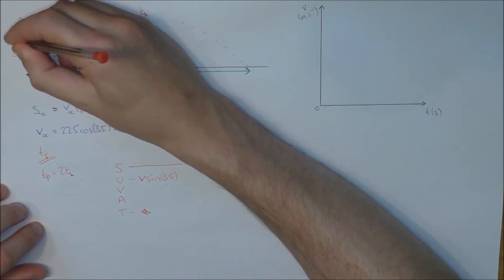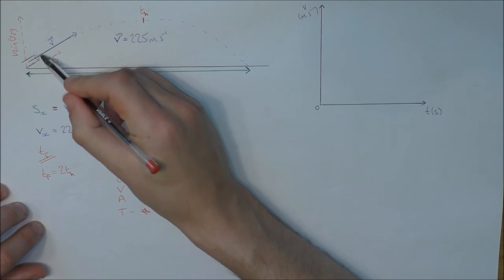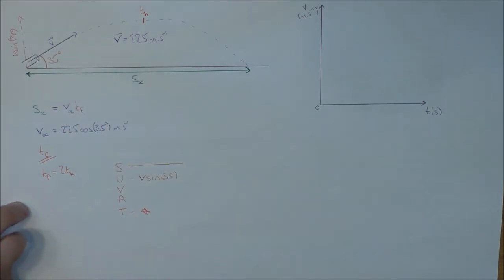If I resolve away from the angle, it's a sine to go through the angle. So I know that that there is V sine 35. I've resolved away from the angle, not through it, so I use sine to get that value.